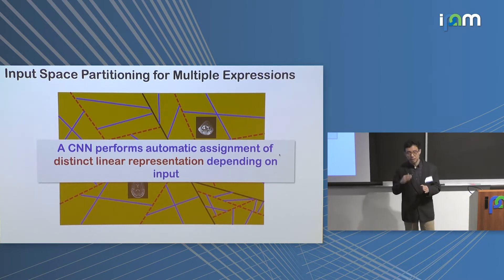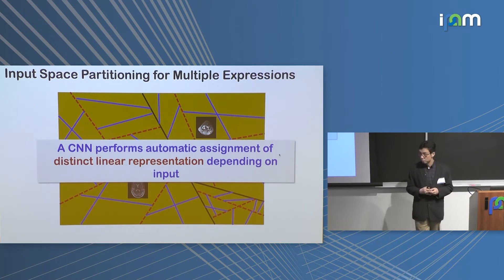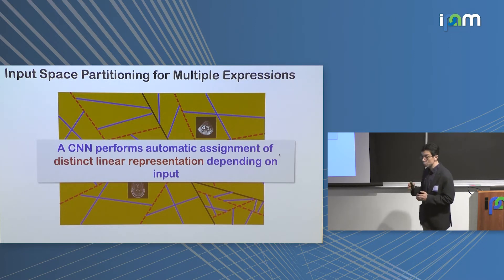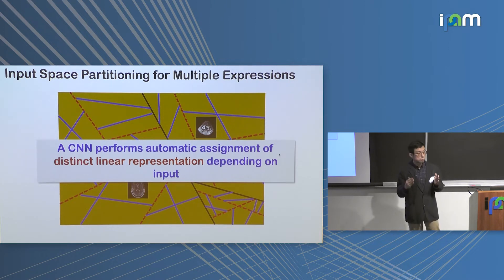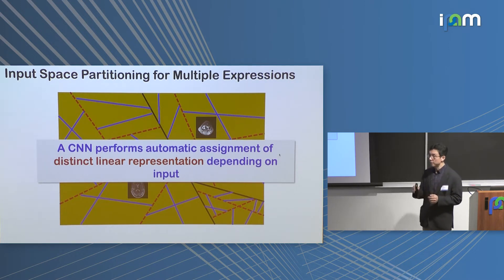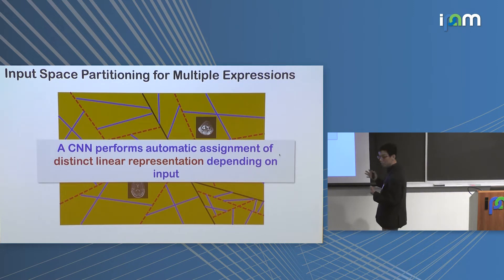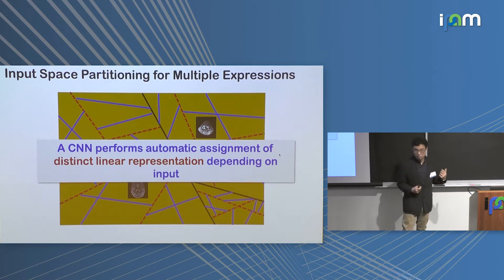Now we can see the close link between neural networks and basis pursuit in classical signal processing. In classical signal processing, you find the linear basis representation by solving an optimization problem for each input. In neural networks, during training the space is partitioned, and during inference the representation is automatically assigned by changing the neural activation pattern — this gives neural networks their real-time reconstruction performance.